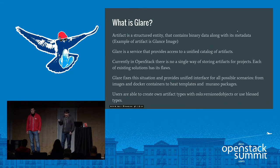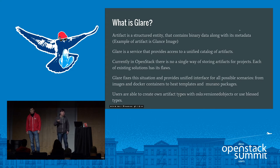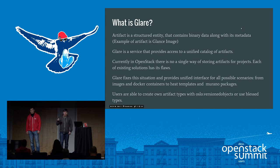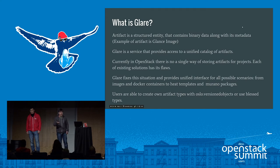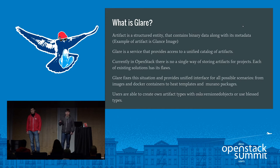So what is Glare? Glare is a service that provides a unified catalog of binary data along with its metadata. Such structures are often called artifacts. We wanted to respond to community needs and create a unified repository of artifacts for all OpenStack projects, because currently there is no single solution. Some projects store their files in databases, on GitHub, directly in Swift, and for Nova there is Glance. None of these solutions address artifact versioning, data immutability, or offer convenient means of storing and searching.